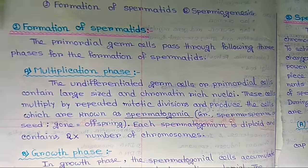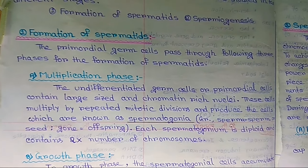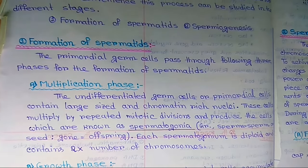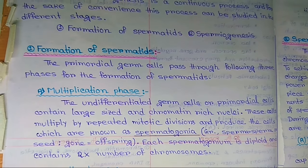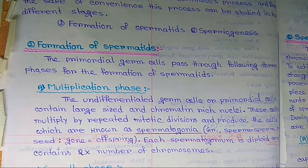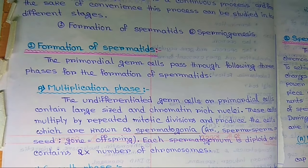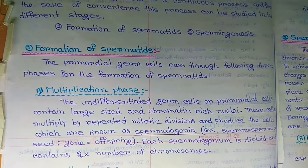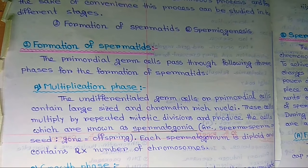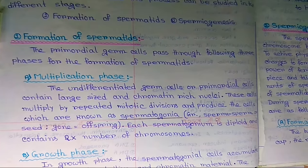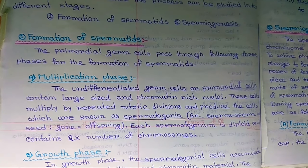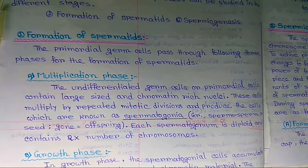The first phase is the multiplication phase. The undifferentiated germ cells or primordial cells contain large-sized, chromatin-rich nuclei. These nuclei multiply by repeated mitotic division and produce cells which are known as spermatogonia. Each spermatogonium is diploid and contains 2N number of chromosomes.